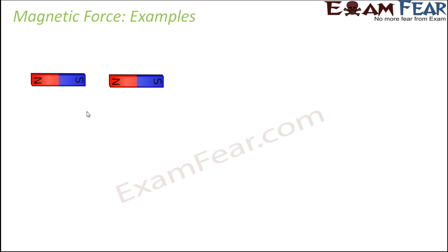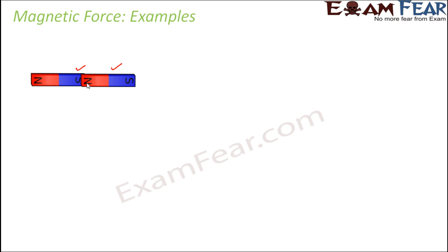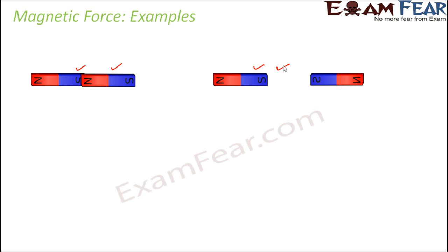Let us look at a few more examples of magnetic force. If you take two magnets and align them such that the south pole of one faces the north pole of another, there is quite a considerable distance between the two magnets and they are not in contact. But still, due to the presence of an attractive force, they tend to move towards each other, causing a change in state of motion. Again, if you take two magnets with their like poles near each other, they tend to move away from each other. Here also they were not in contact, but still the force existed.